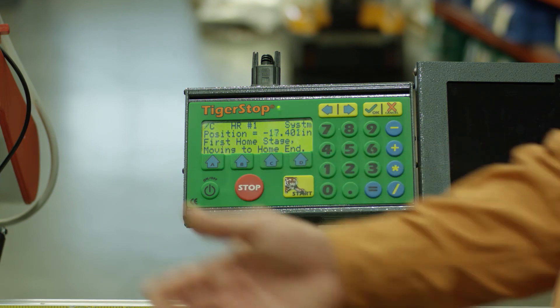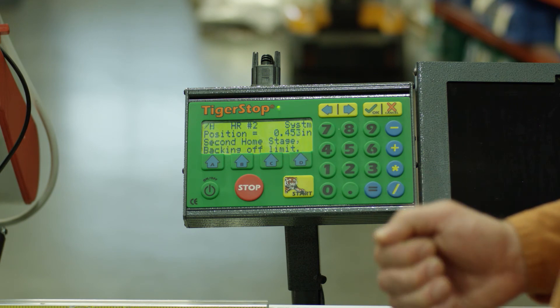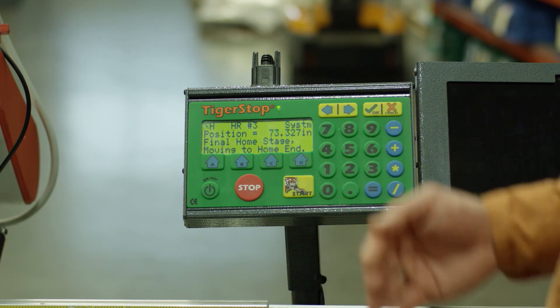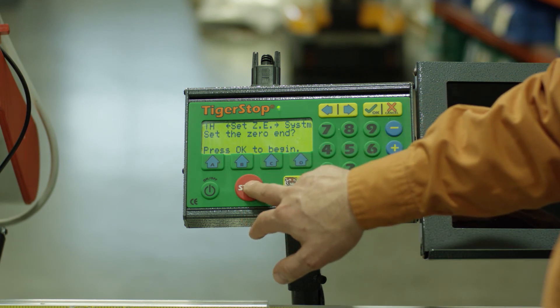Otherwise, if you press start and the carriage moves in, then you should be in good shape. So we've done that, it homes, and we're in good shape. That's all we need to do to change the zero end.